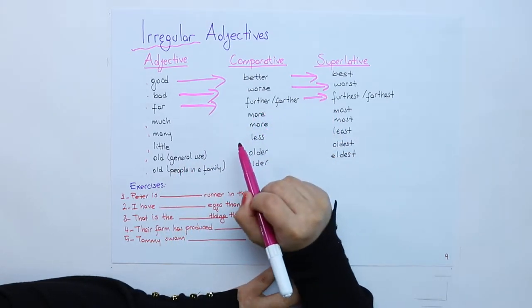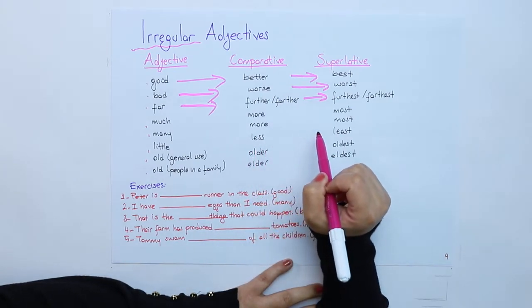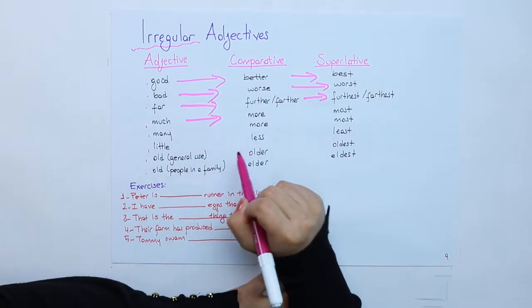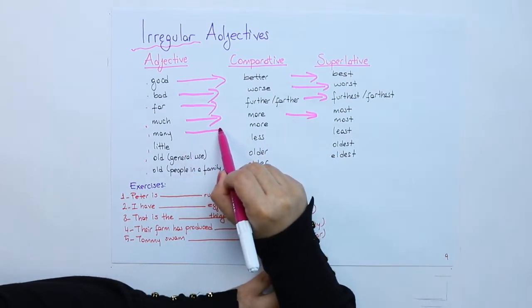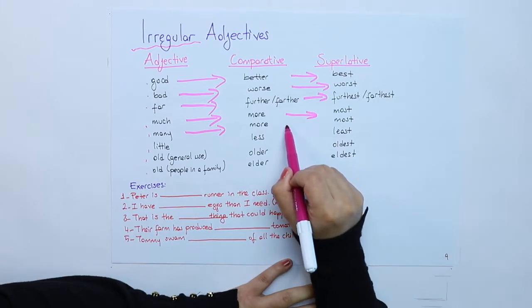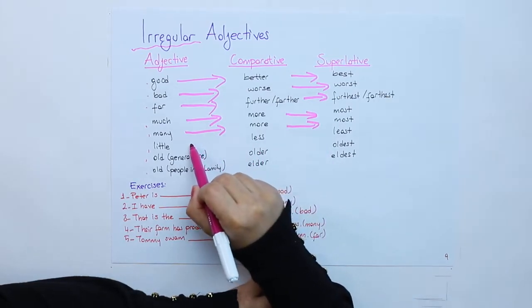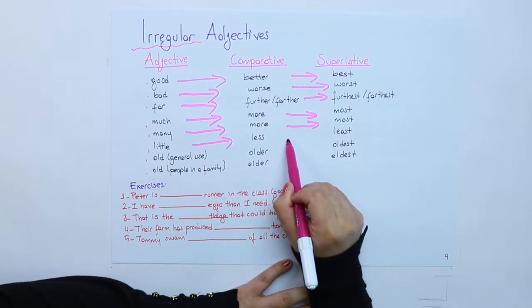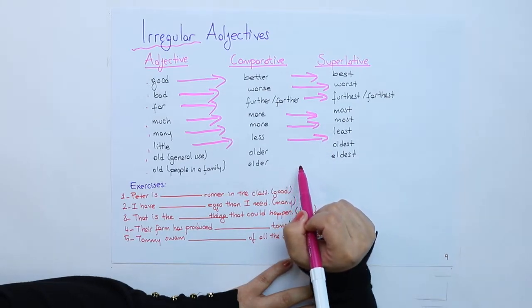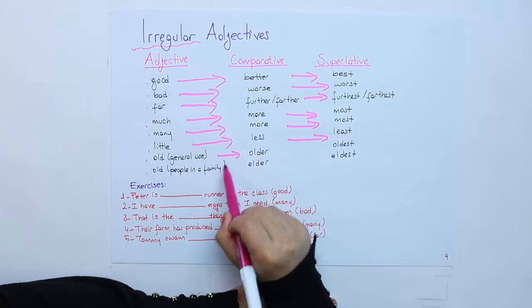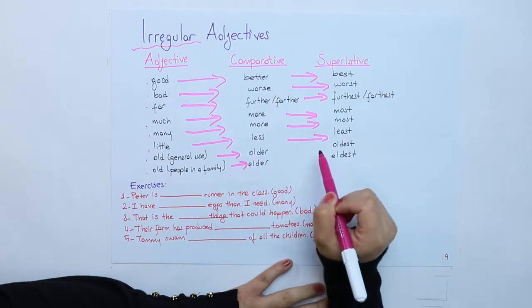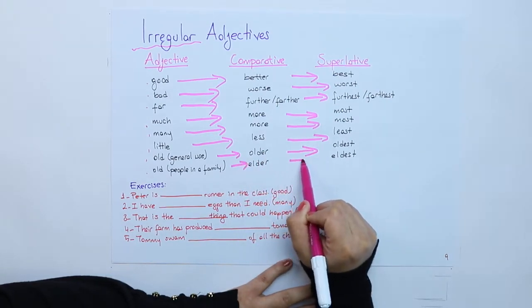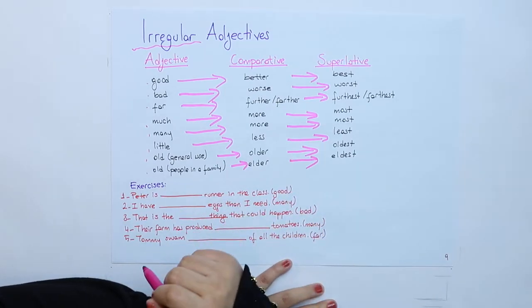Much, more, the most. Many, more, the most. Little, less, the least. Old, older or elder, oldest or eldest.